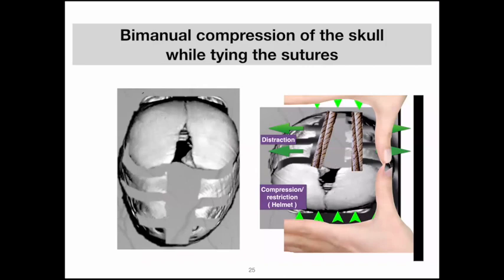First you unlock the skull, remove most of the sagittal suture, and make many transverse cuts in the parietal bone. Then you make holes in what is left of the frontal and occipital bones and tie them together while your assistant compresses the skull gently with both hands. This results in shortening of the skull in the anterior-posterior diameter, and the brain moves laterally, causing expansion in the transverse diameter — immediate correction of the skull shape. These sutures work as an internal helmet, keeping the skull in the new position and preventing it from elongating, while only allowing the brain to expand laterally, gradually adding more correction over time.